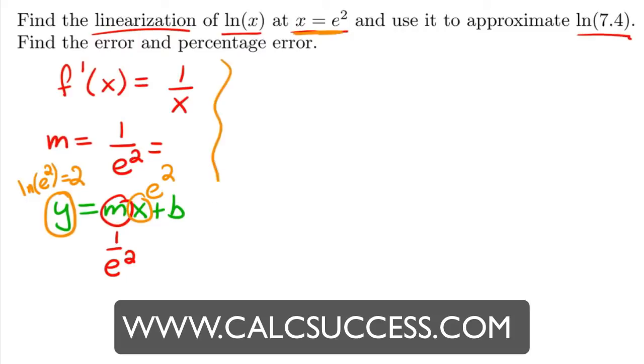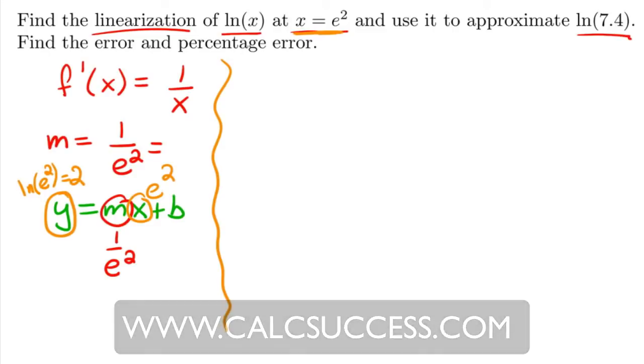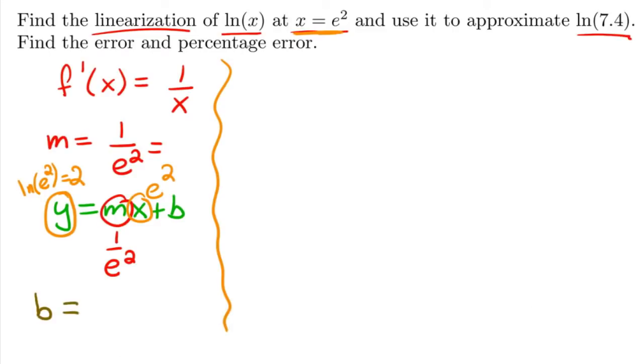Plugging all that in, we get that b is simply going to equal—so this is just 1, so we have 2, and then we bring over the 1—so b is simply going to equal 1.